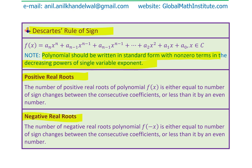For negative real roots, we check the sign changes of f(-x). The number of negative real roots is either equal to the number of sign changes between consecutive coefficients of f(-x), or less than it by an even number — because complex roots always exist in conjugate pairs.